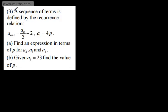This is question number 3. We're told a sequence of terms is defined by the recurrence relation a sub n plus 1 is equal to a sub n divided by 2 minus 2 and a sub 1 is equal to 4p. In part a, we need to find an expression in terms of p for a2, a3 and a4.